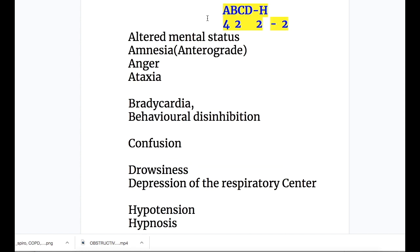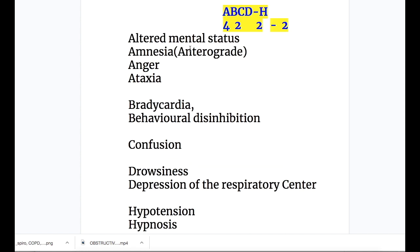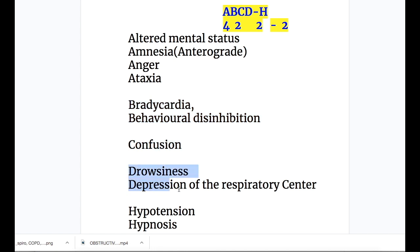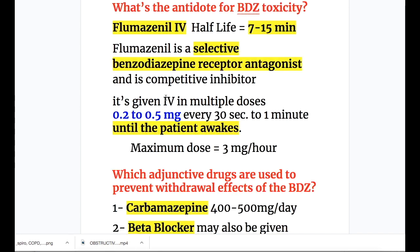The mnemonic for the toxic effects of benzodiazepines is A-B-C-D-H: A for altered mental status, amnesia, anger, and ataxia; B for bradycardia and behavioral disturbances; C for confusion; D for drowsiness and depression of the respiratory center; and H for hypertension and hypnosis.